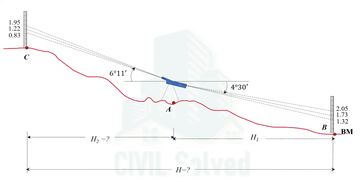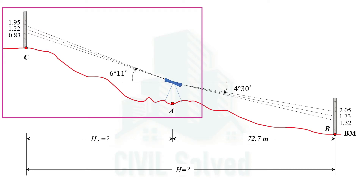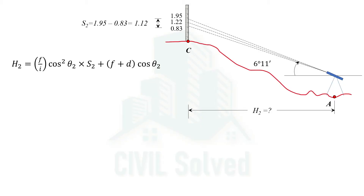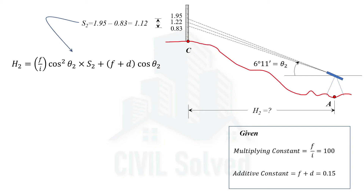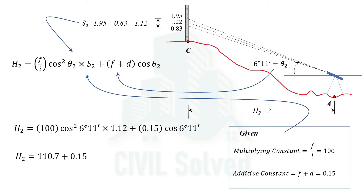Now let's consider the second setup to determine the horizontal distance H2. The same horizontal distance formula is rewritten for this setup. The staff intercept S2 is the difference of the upper and lower readings, which comes out to be 1.12. The angle theta2 is 6 degrees and 11 minutes. Using the same multiplying constants and placing the values of S2, theta2, and the constants, H2 comes out to be 110.85 m.